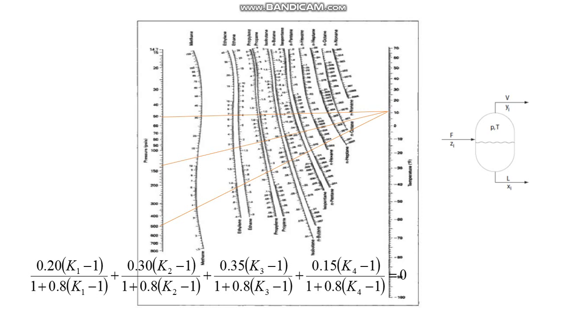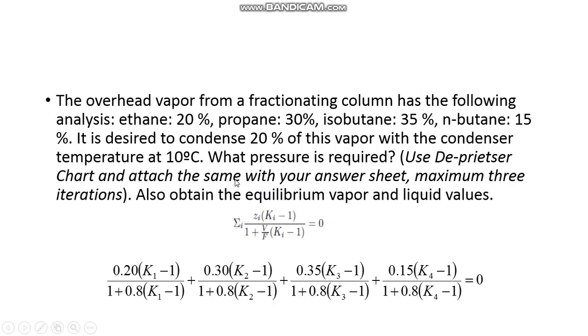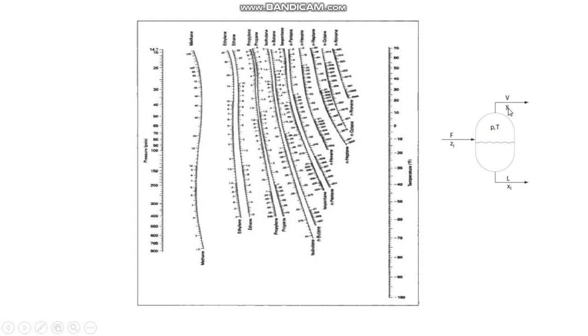So once I solve that, what I will get is the value of pressure and naturally K1, K2, K3, K4 corresponding to that pressure. Now, if you look at the problem statement, it is also said that we have to obtain equilibrium vapor and liquid values. That is, we are talking about this Y and X. So we have got the value of this P, temperature was given, V was given, and now we are supposed to find out Y and X.